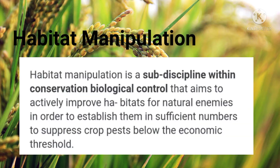Habitat manipulation is a sub-discipline within conservation biological control that aims to actively improve habitats for natural enemies in order to establish them in sufficient numbers to suppress crop pests below the economic threshold.